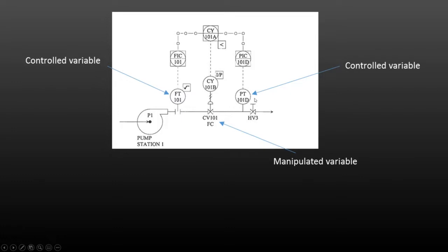When that device finds itself in an extraordinary circumstance, we can use a selective control strategy to select the other measuring device in order to control the process and avoid any unfortunate situations. And that's the long and short of selective control.